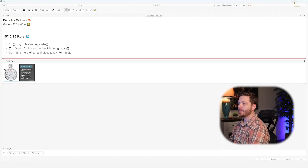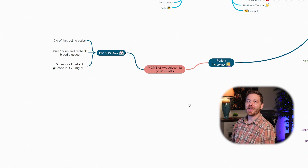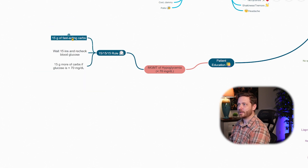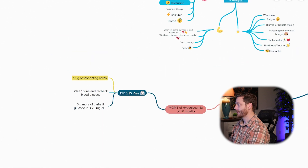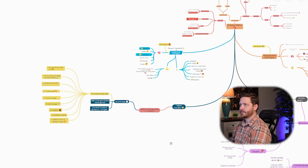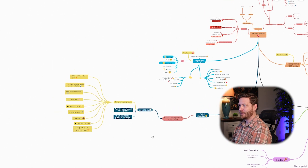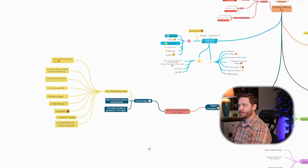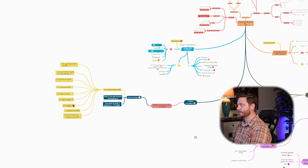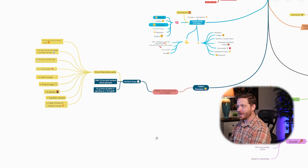Back to our mind map. Now that we know the rule, let's add in what 15 grams of fast-acting carbs actually looks like. I'll put it in a yellow rectangle and paste our chart in. We've got our 15-15-15 rule and then our 15 grams of fast-acting carbs detail. That looks great. Now let's make an Anki card over those 15 grams of fast-acting carbs.